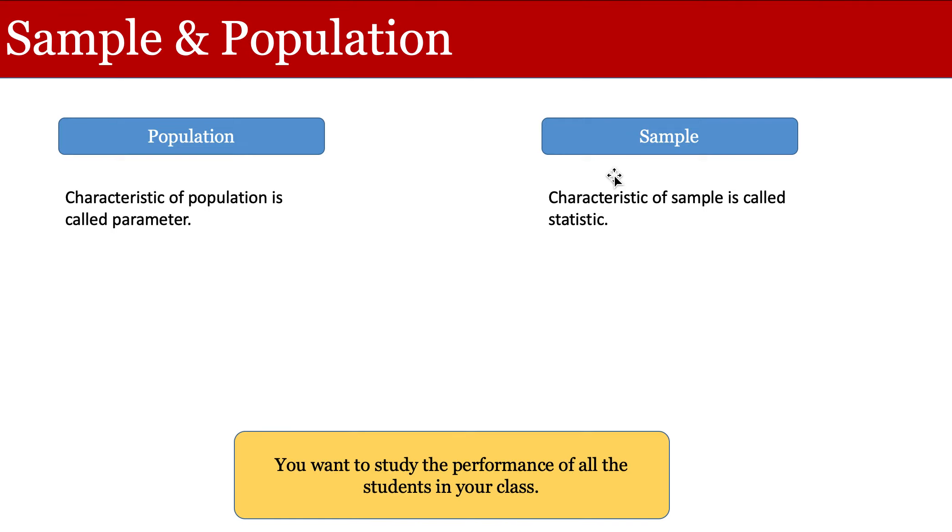Now, one important thing to remember is in population, when we talk about a characteristic of population, that is called parameter. And usually, for instance, if we are computing the average of population, we will call that parameter. Now, the same characteristic for the sample is called statistic. So for instance, let's say you want to study the average salary of people in a particular region. The average salary in the population will be known as parameter while the same characteristic, the same measure in the sample will be called as statistic.